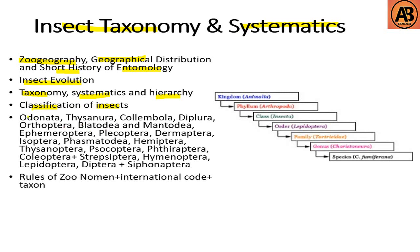In this course we'll also learn about different orders of insects such as Odonata, Thysanura, Collembola, Diplura, Orthoptera, Blattodea, Mantodea, Ephemeroptera, Plecoptera, Dermaptera, Isoptera, Phasmatodea, Hemiptera, Psocoptera, Phthiraptera, Coleoptera, Strepsiptera, Hymenoptera, Lepidoptera, Diptera, and Siphonaptera. At last we'll cover the rules of zoological nomenclature, international code, and taxon. So let's get started.